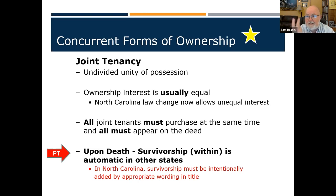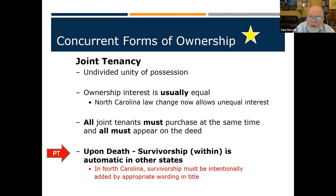In North Carolina, ownership in joint tenancy does not have to be equal — but everybody must be on the deed and all joint tenants must purchase at the same time. If one dies, survivorship goes to the remaining parties. In North Carolina, survivorship must be intentionally added with appropriate wording in the title — the deed must say 'joint tenants with rights of survivorship,' not just 'joint tenancy.'